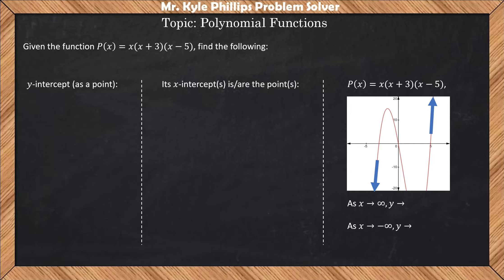They want us to find the y-intercept, the x-intercepts, both as points, and then they want us to determine end behavior here, so as x approaches positive infinity and as x approaches negative infinity.